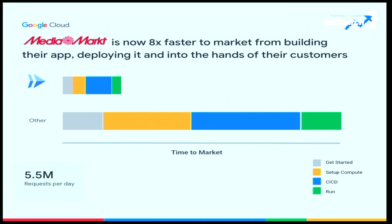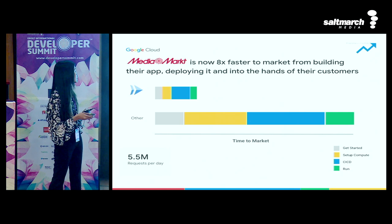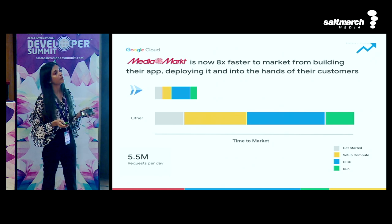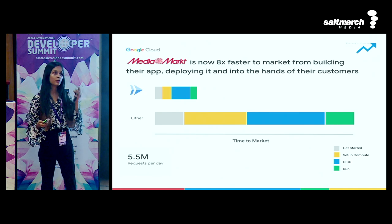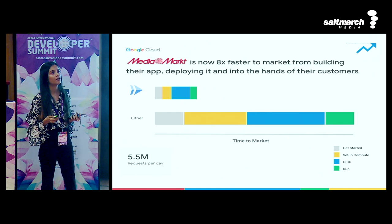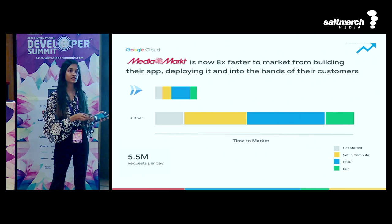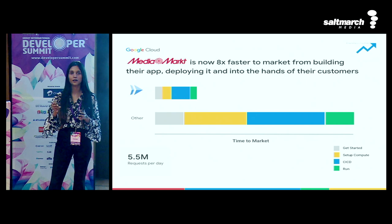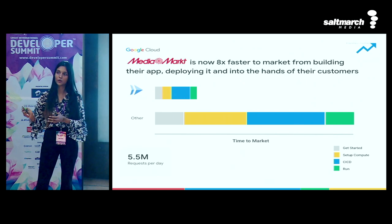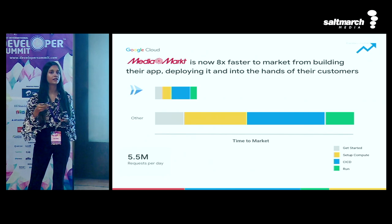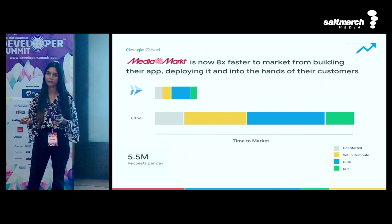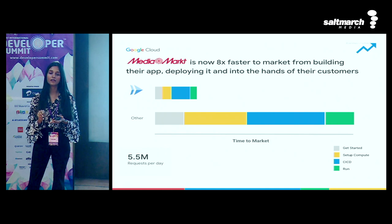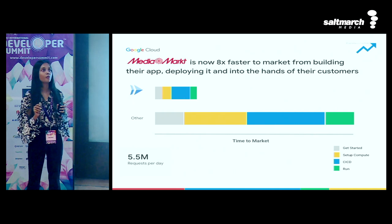Here's a real-life example. Media Markt is Europe's largest consumer electronics retailer. When they moved from on-prem to Cloud - initially on GKE - they found it was very easy and quick to build. Because of that success, they wanted to try Google Cloud for a new workload. GKE is great, but Kubernetes takes time, so this time they tried Google's fully managed compute platform, Cloud Run. They were able to get to market eight times faster, able to serve 145% more traffic during COVID, with 40% cost reduction.